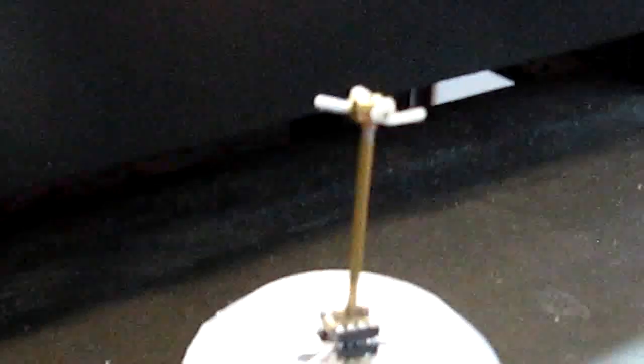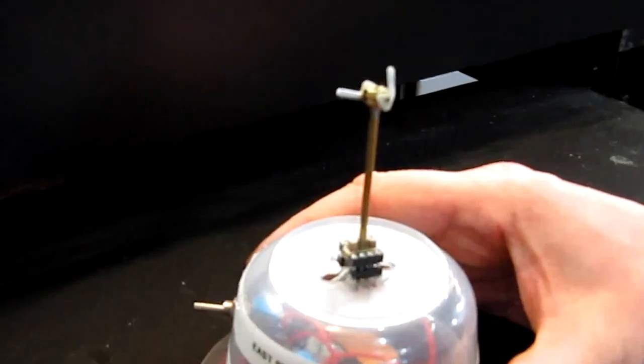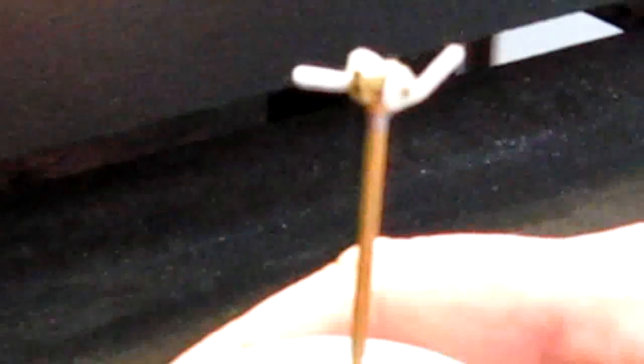These are two position semaphore, which is what they used on the railway. I'll just show it one more time. And then down. And that's the semaphore.